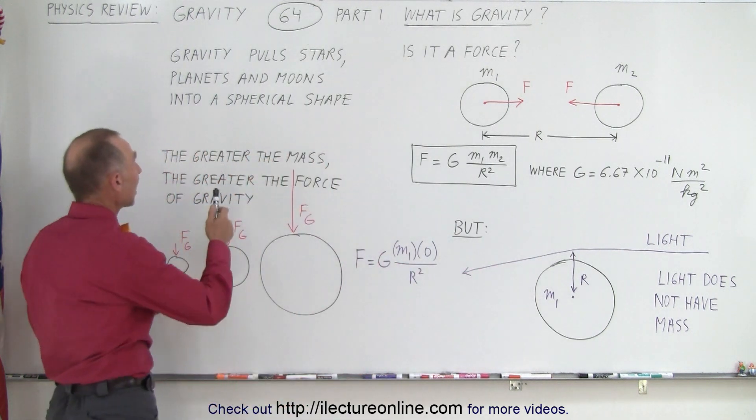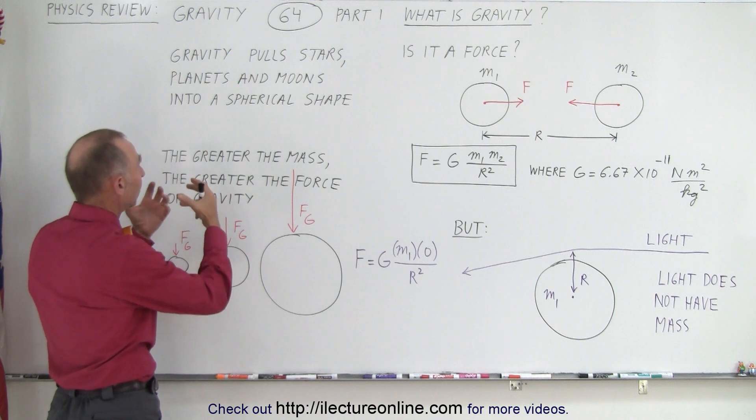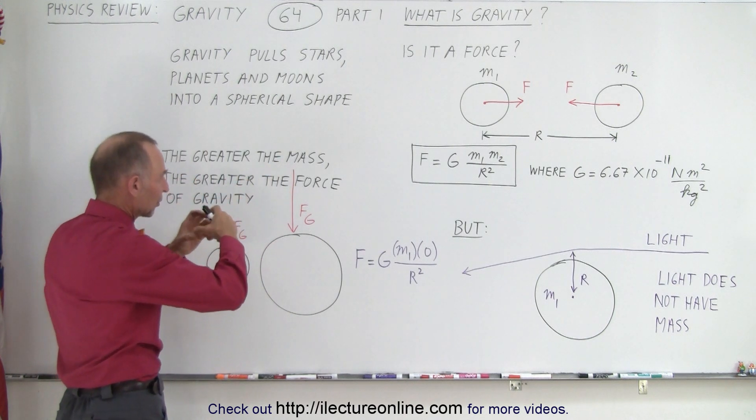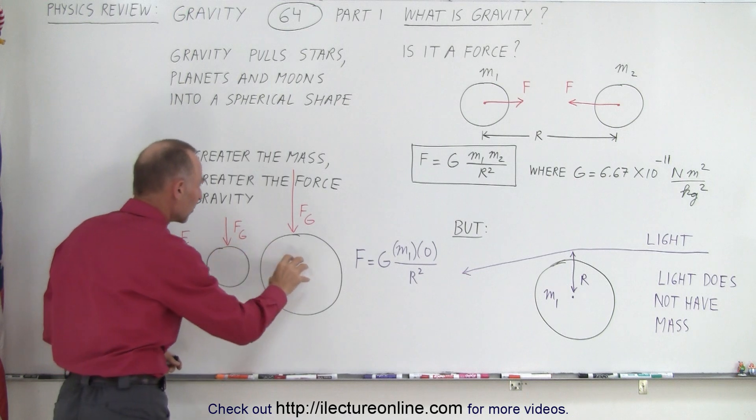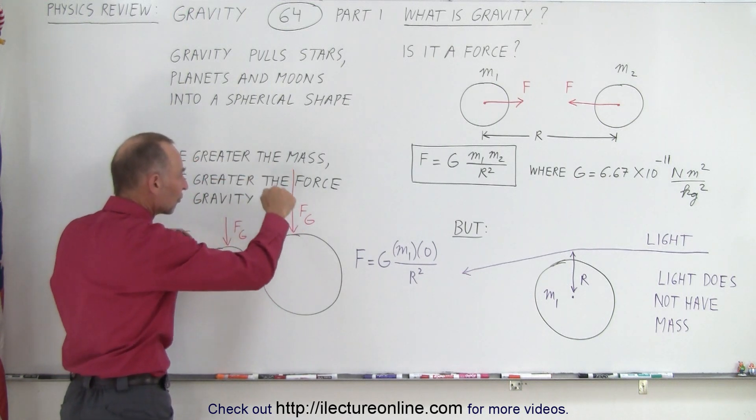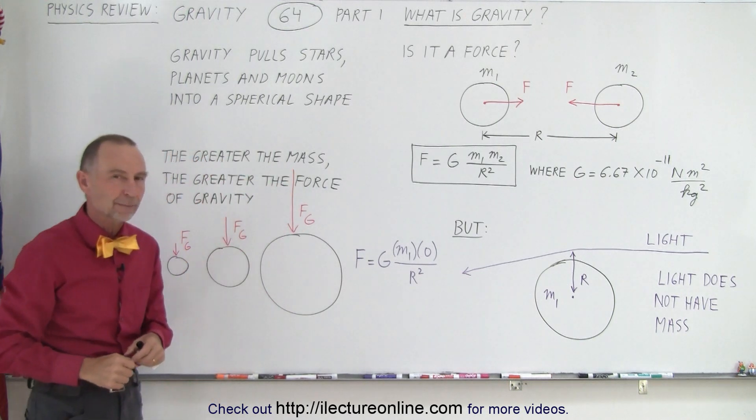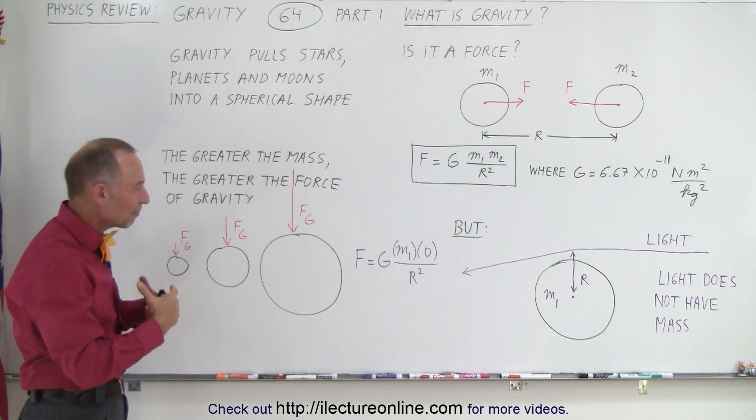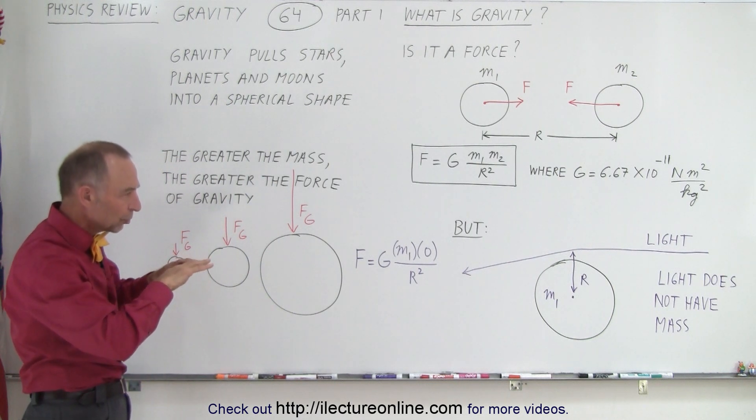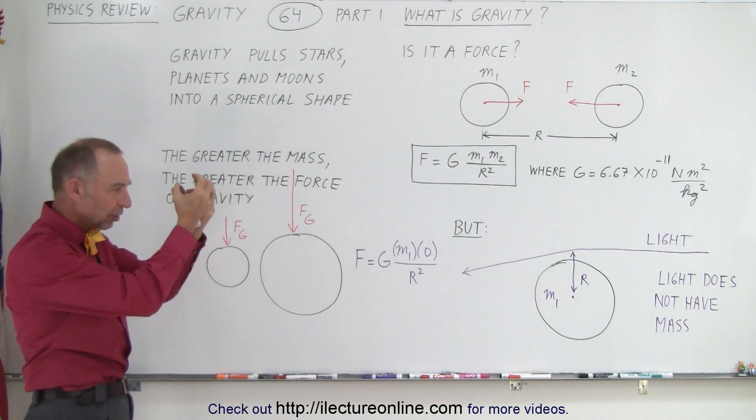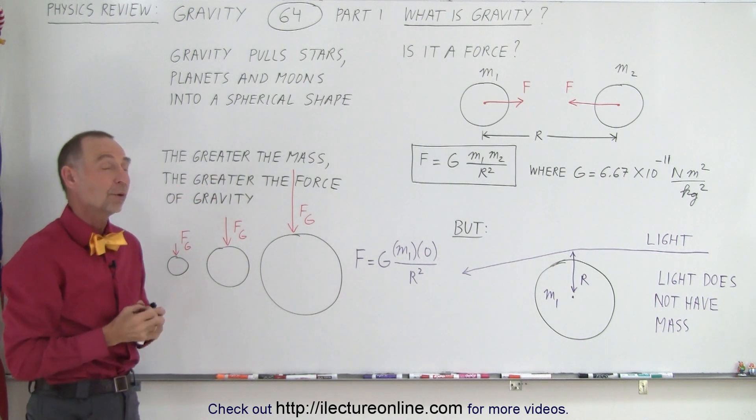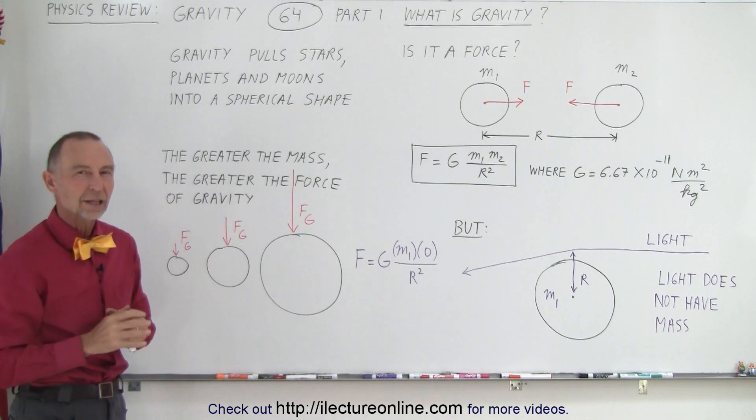We also know that gravity is what causes stars, planets, and moons to pull into a spherical shape. And the larger the mass of the object, the greater the force of gravity towards the object. So it appears as if mass does something to the space around it, causing other objects to be attracted to it. But we don't quite understand that principle yet.